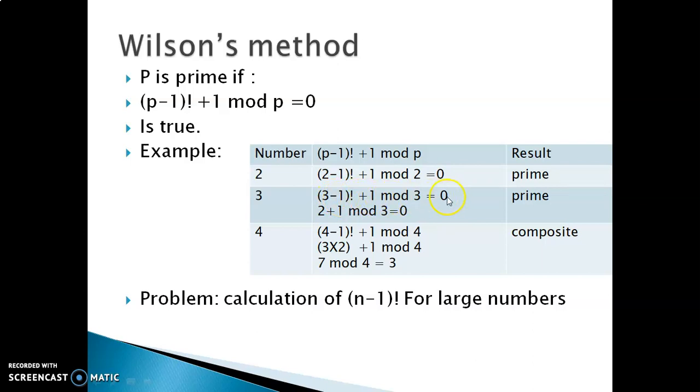Then 4, 4 minus 1 is 3, so 3 times 2 will give you the factorial 6, plus 1, 7 mod 4 will give you 3. And 4 is a composite number, and therefore the mod is not 0, it is some other number getting generated, so it is a composite number. And this is true for all the numbers.